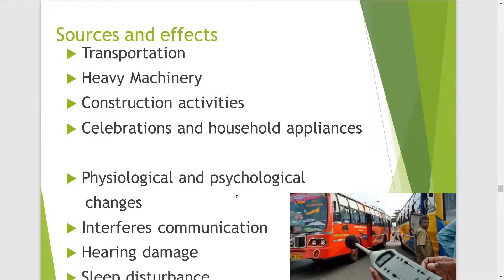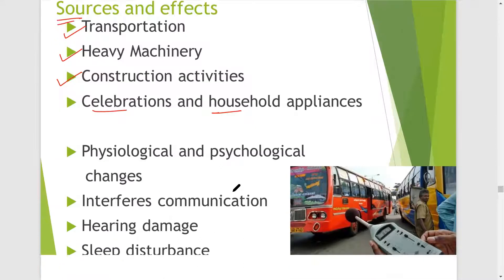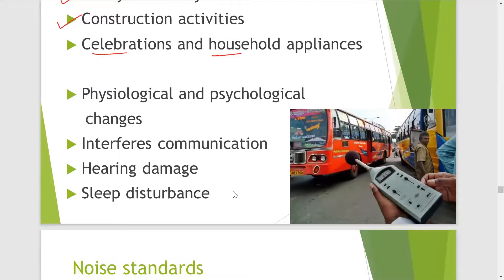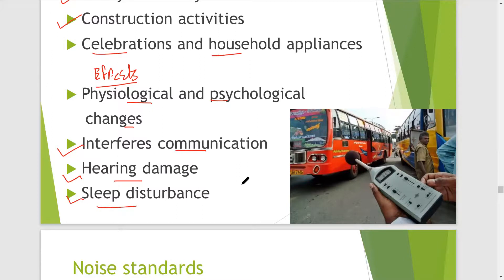What can be the sources and effects of noise pollution? Sources include transportation, heavy machinery, construction activities, celebrations, and household appliances. Effects can be physiological and psychological changes; it also interferes with communication, can cause hearing damage, and sleep disturbance.